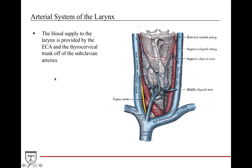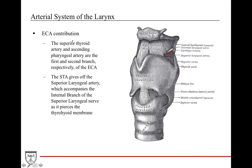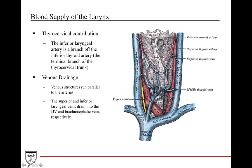The blood supply to the larynx is provided by the ECA and the thyrocervical trunk off the subclavian. The ECA contributes via the superior thyroid artery and the ascending pharyngeal artery — the first and second branches of the ECA. The superior thyroid artery gives off the superior laryngeal artery, which accompanies the internal branch of the superior laryngeal nerve as it pierces the thyrohyoid membrane and enters the larynx. The thyrocervical contribution is via the inferior laryngeal artery, a branch off the inferior thyroid artery. Venous drainage parallels the arteries — the superior and inferior laryngeal veins drain to the IJV and the brachiocephalic vein respectively.